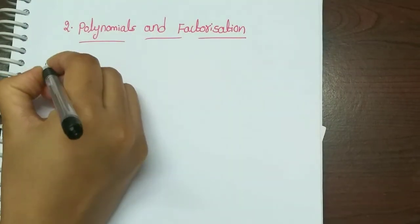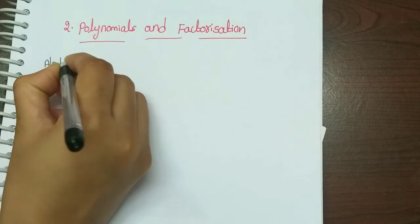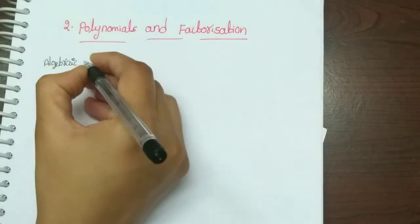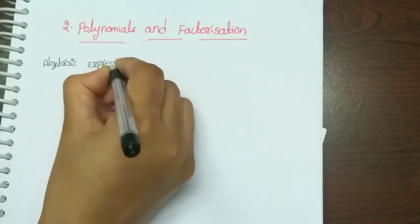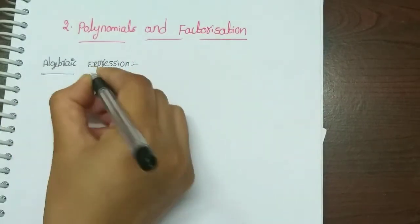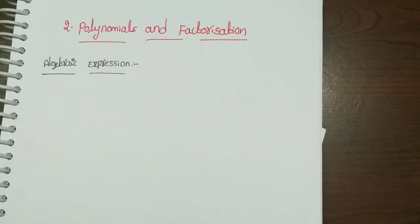First, this polynomial is an algebraic expression. An algebraic expression is a single term or combination of terms connected by the symbols plus or minus. An algebraic expression can be a single term.